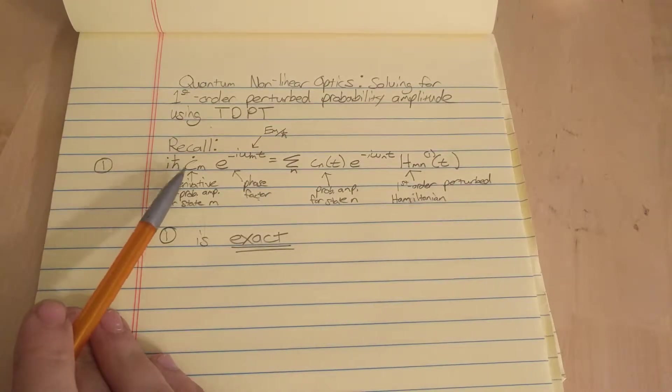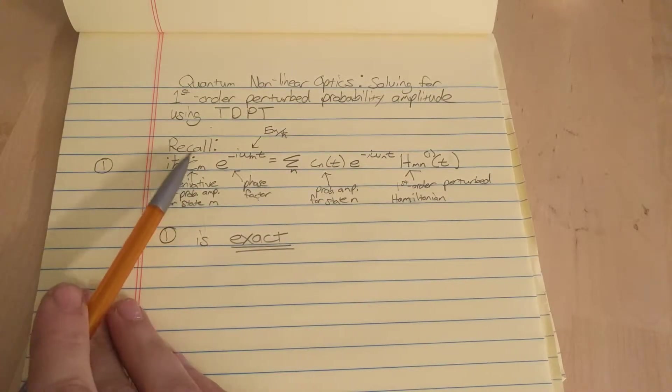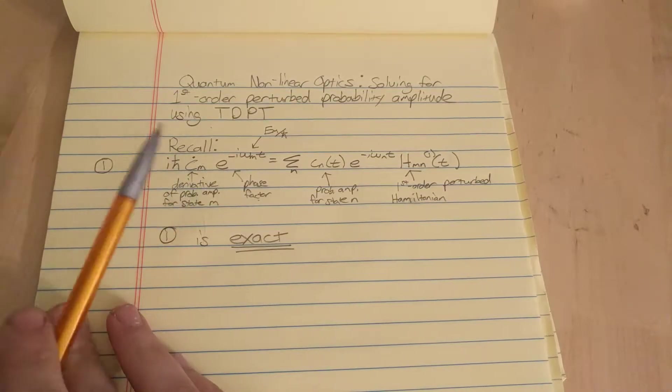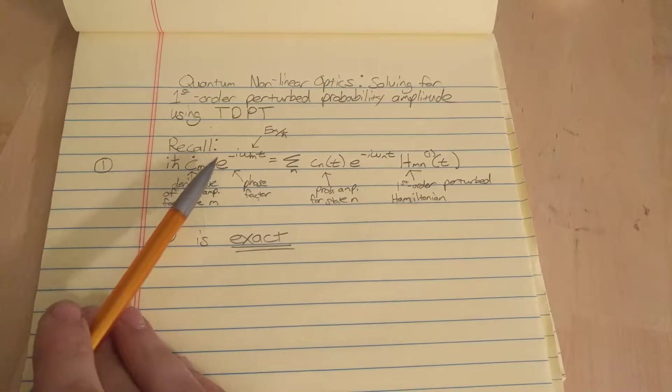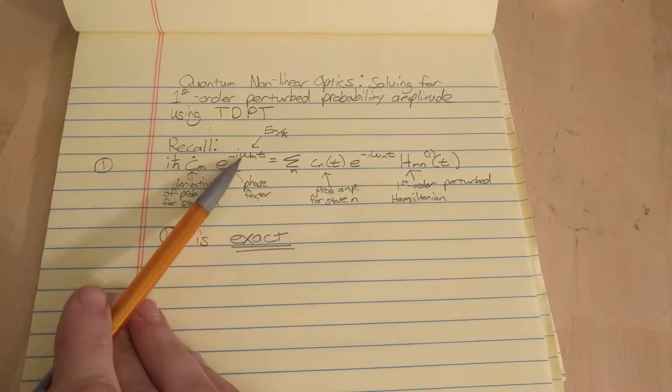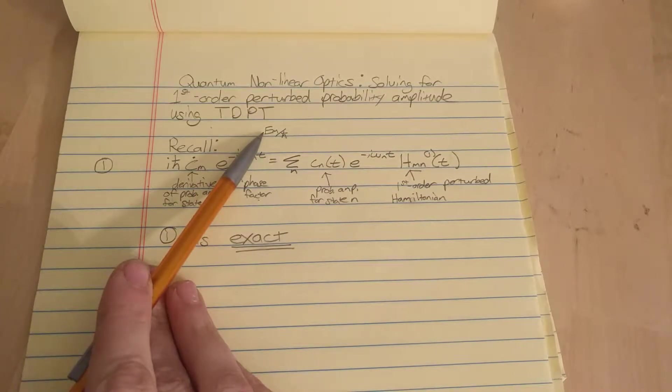I tried to remind you what the variables are here. C_M dot, the dot's the time derivative, and C_M is the probability amplitude to be in state M. This e to the minus whatever is a phase factor, and the omega M is the same thing as the energy of state M divided by h-bar.